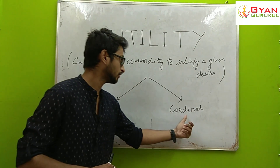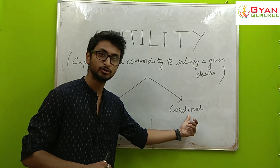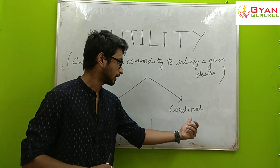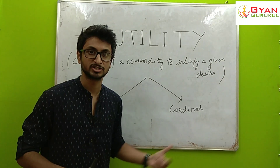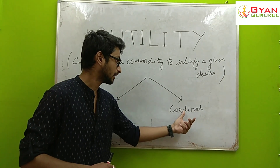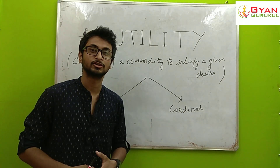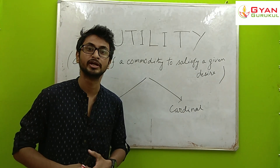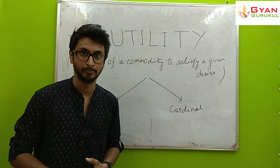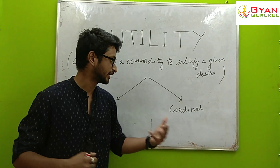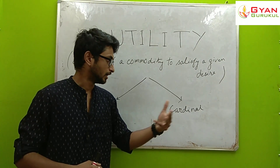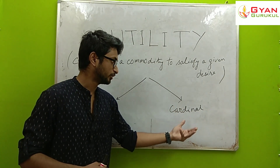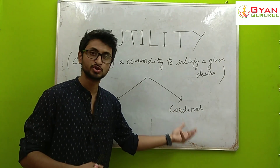The Cardinal Utility approach uses the cardinal unit of measurement. This was developed by Alfred Marshall, and it allows us to measure utility numerically for a particular commodity.